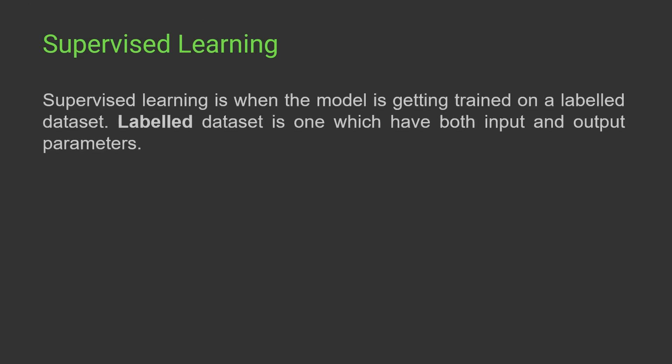Supervised learning is a kind of learning where we feed the machine with datasets that are already labeled. In supervised learning, we give our models a dataset that is a labeled dataset — meaning we give both question and answer pairs, i.e., both input and output, to our machine learning model and it learns from them.